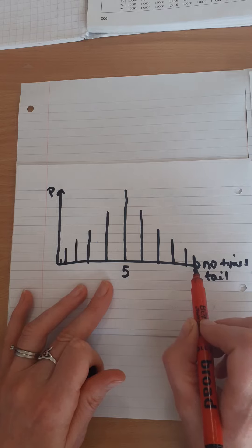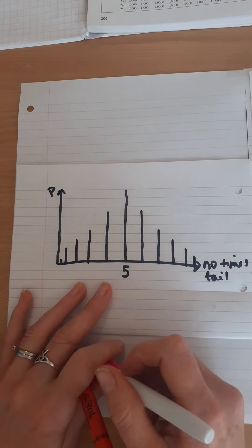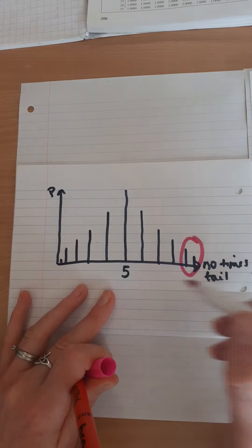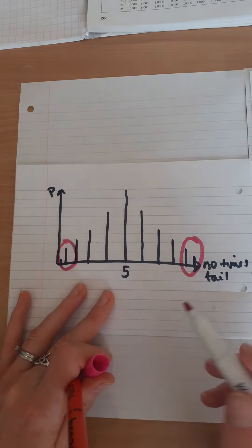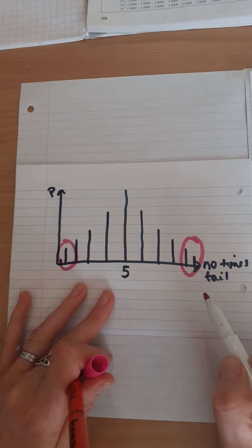And our critical region is a region where we decide that this is just too unlikely to happen. It's just too unlikely that I would get no tails or 1 tail out of 10, 9 or 10 tails out of 10.